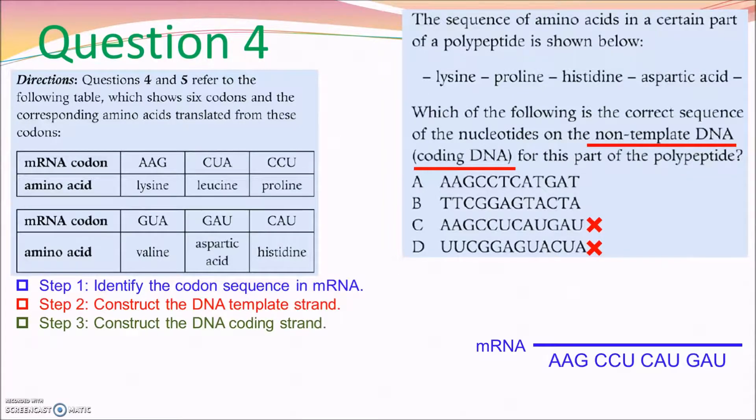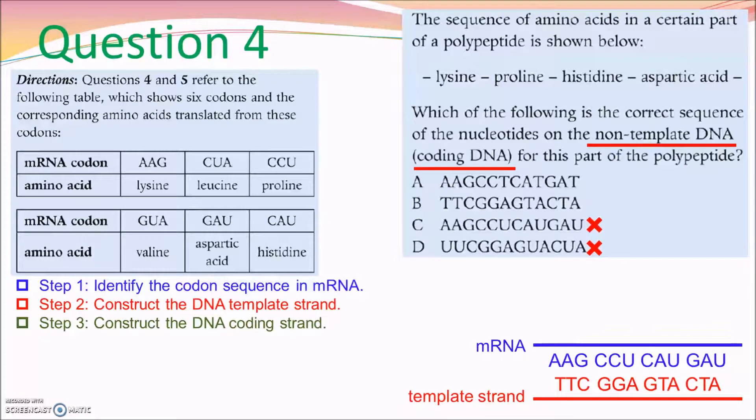The first way is to follow the three steps shown here. Step 1, we need to identify the codon in mRNA based on the amino acid sequence given. Step 2, by using the mRNA, you can construct the DNA template strand based on the complementary base pairing. A pairs with T, G pairs with C, and U pairs with A, and so on.